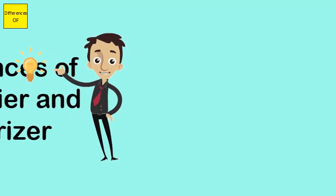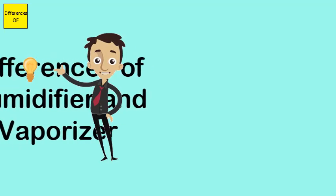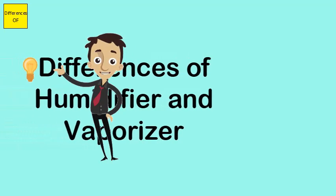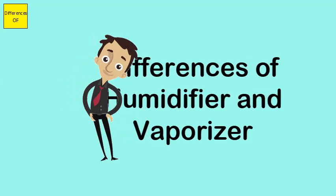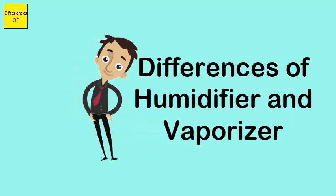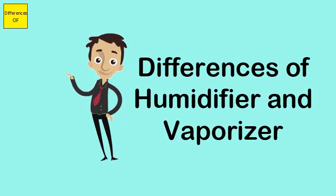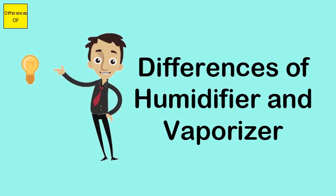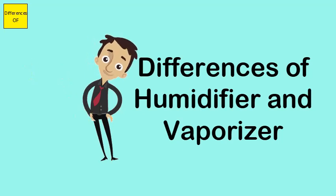Difference between humidifier and vaporizer. A humidifier is used to add moisture to the air. A vaporizer is a type of warm mist humidifier.